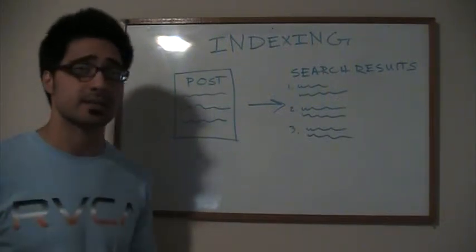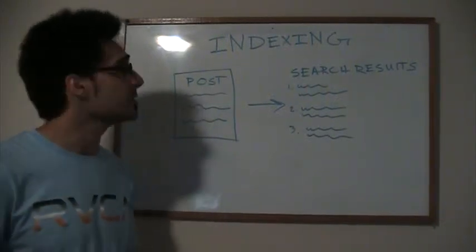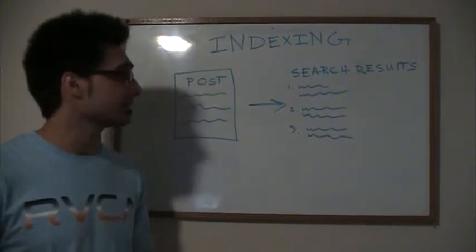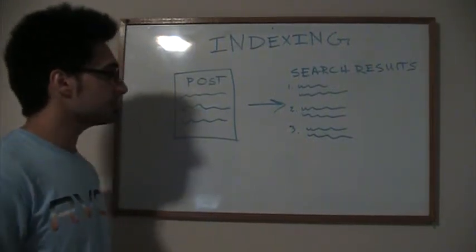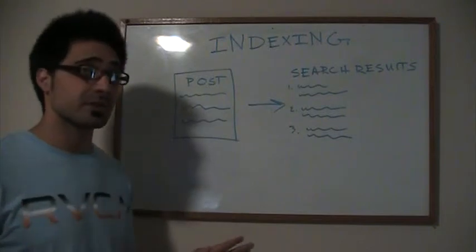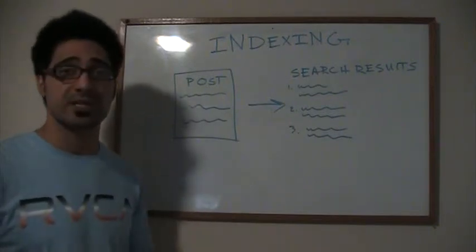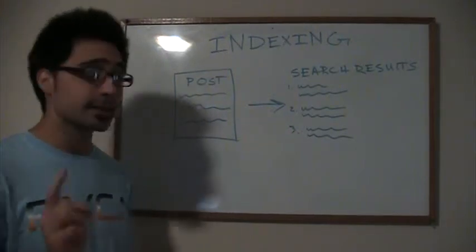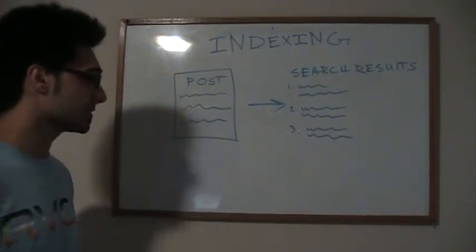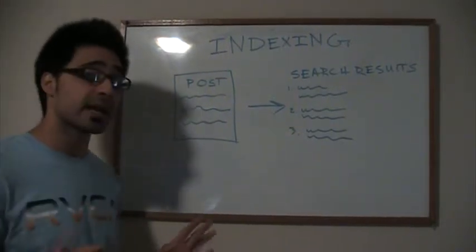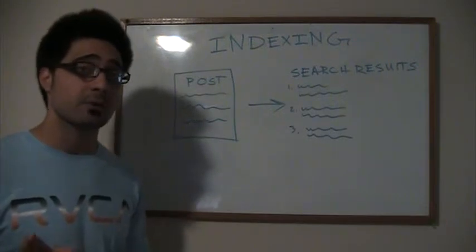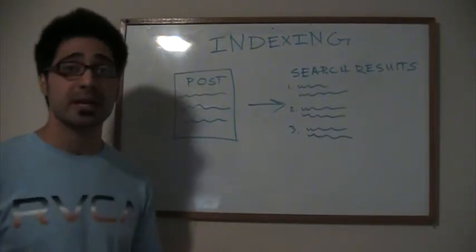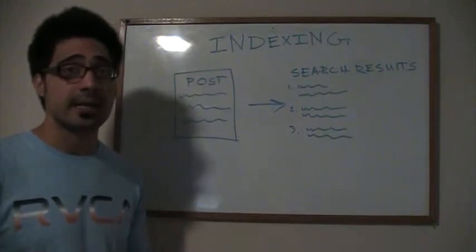To fix the indexing problem, you can use the robots meta tag, which I have in another video that you can view. First things first, know whether your pages are being indexed or not — Google Webmaster Tools will show you. The neat thing about Google Webmaster Tools is you can actually change the frequency or the rate that the crawl bot crawls your page and decides whether to index it.